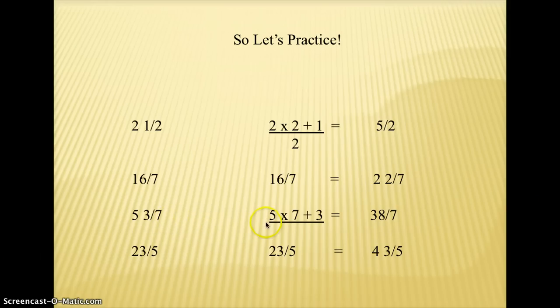Five and three-sevenths. So five holes. So five times seven, because it takes seven pieces to make one hole. So five times seven is thirty-five plus the three pieces that I already had would be thirty-eight-sevenths. And then twenty-three-fifths. So it would be twenty-three divided by five. Five going into twenty-three four times with three left over. So that gives you four and three-fifths.